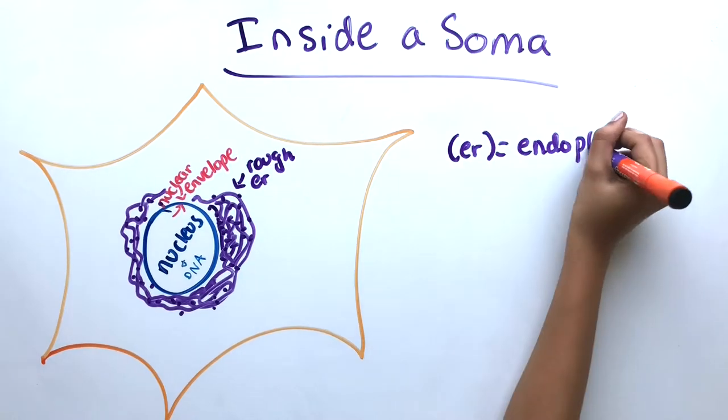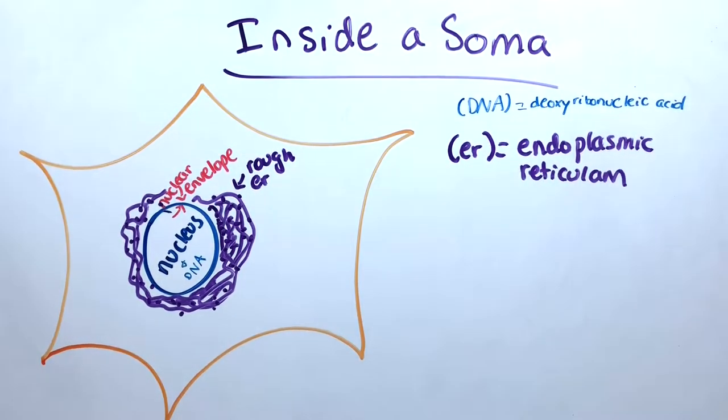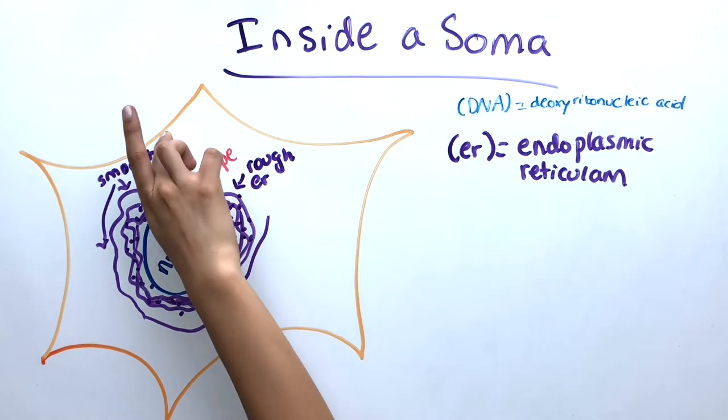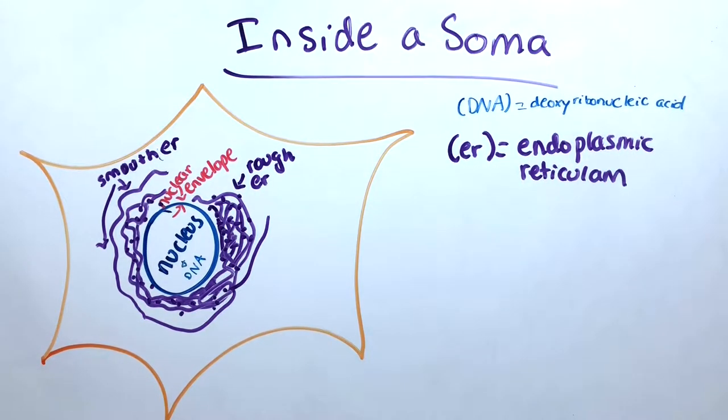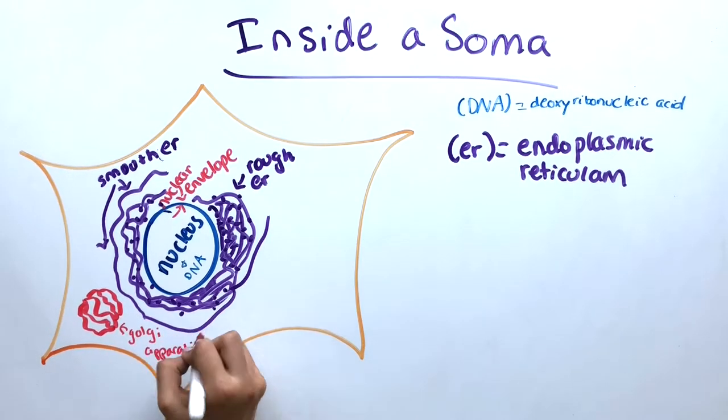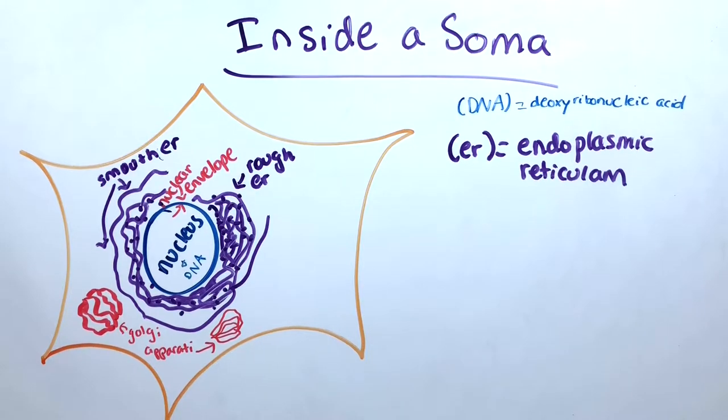The rough endoplasmic reticulum consists of membrane stacks speckled with ribosomes and synthesizes proteins. The smooth endoplasmic reticulum does not contain ribosomes and performs various functions such as regulation of the cell. The Golgi apparatus is a stack of membrane-enclosed disks that processes and packages proteins for their functions.